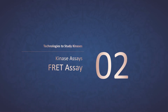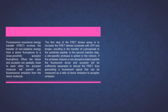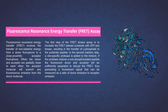Part 2: Fluorescence resonance energy transfer, or FRET assay. Fluorescence resonance energy transfer involves the transfer of non-radiative energy from a donor fluorophore to a close proximity acceptor fluorophore. When the donor and acceptor are spatially close to each other, the acceptor molecule will quench any fluorescence emission from the donor molecule. The first step of the FRET kinase assay is to incubate the FRET-labeled substrate with ATP and kinase, resulting in the transfer of gamma phosphate to the substrate peptide. In the second reaction step, a site-specific protease is added to the mixture. If the protease cleaves a non-phosphorylated peptide, the fluorescent donor and acceptor will be sufficiently separated to disrupt the FRET, thus generating a fluorescent signal that can be measured as a ratio of donor emission to acceptor emission.